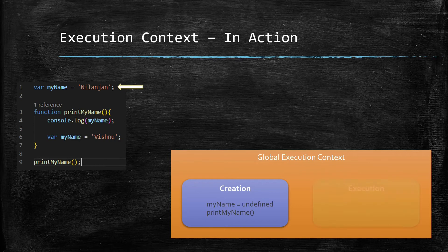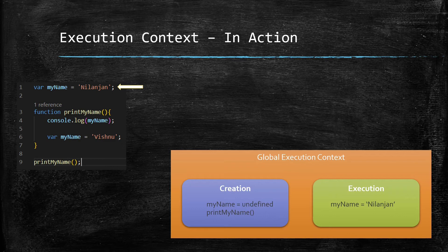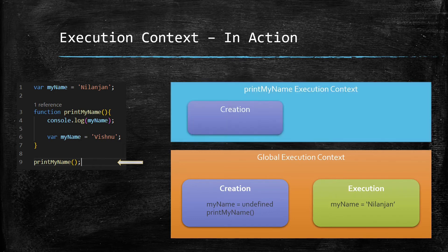Next comes the execution phase. In this phase, variables get their actual values assigned. The 'myName' variable, which had 'undefined' during creation, now gets the value 'Nilanjan' assigned to it. Line three is a function statement, so nothing gets executed until we reach line nine where the function is invoked. At that point, a dedicated execution context for this function is created and enters the creation phase.